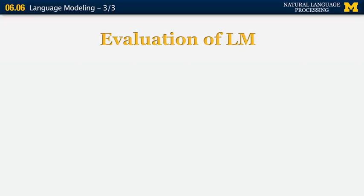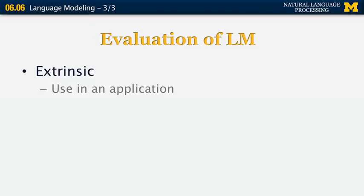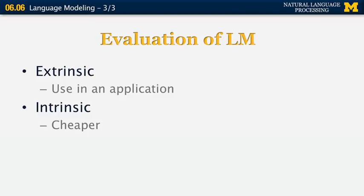First of all, how do we evaluate the quality of a language model? There are two types of evaluations. The first is known as an extrinsic evaluation — that is, to use the language model in a specific application, for example, speech recognition, machine translation, or part-of-speech tagging. The second method is based on an intrinsic evaluation that has to do with the properties of the language model itself.